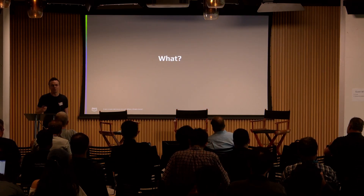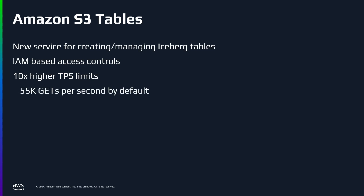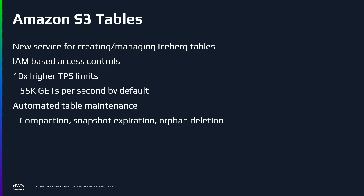What is S3 Tables? Amazon S3 Tables is a new service for creating and managing Iceberg tables. It has IAM-based access controls — think bucket policies like S3. On the performance side, it has 10 times higher TPS limits, about 55,000 GET requests per second by default. It has automated table maintenance right out of the box: compaction, snapshot expiration, and orphan deletion — all enabled as soon as you create a table. And it's fully compatible with Iceberg OSS.